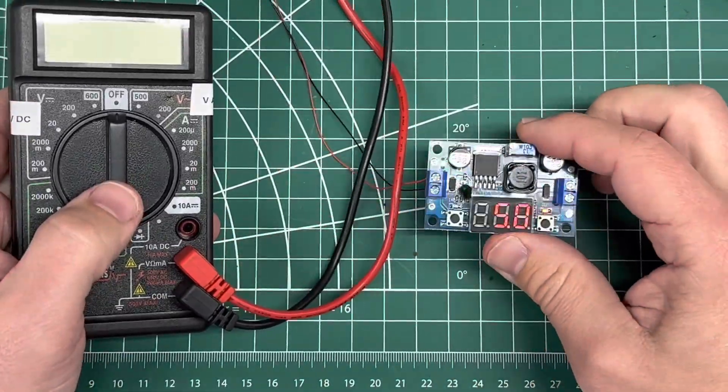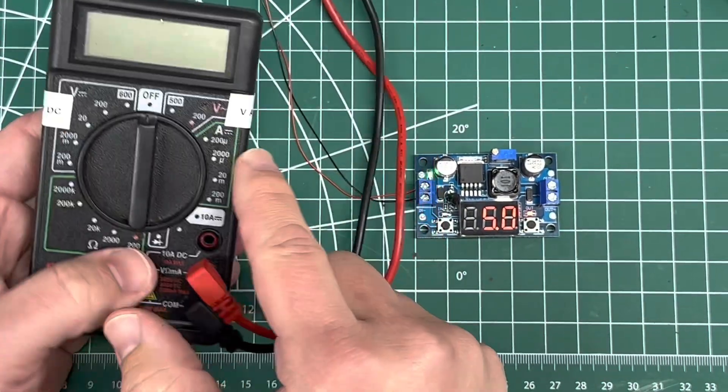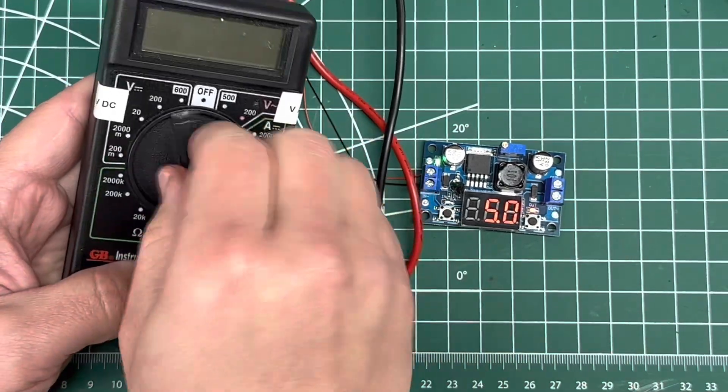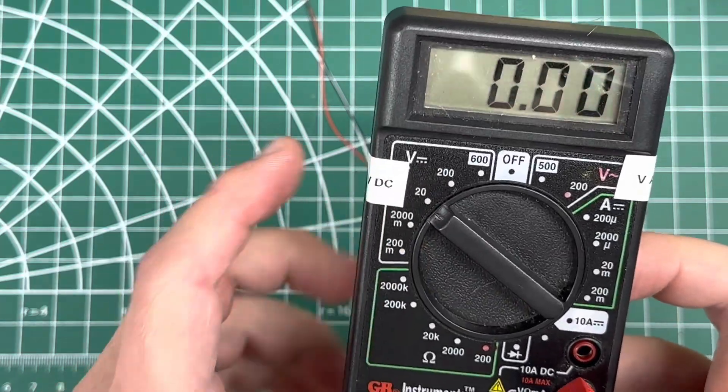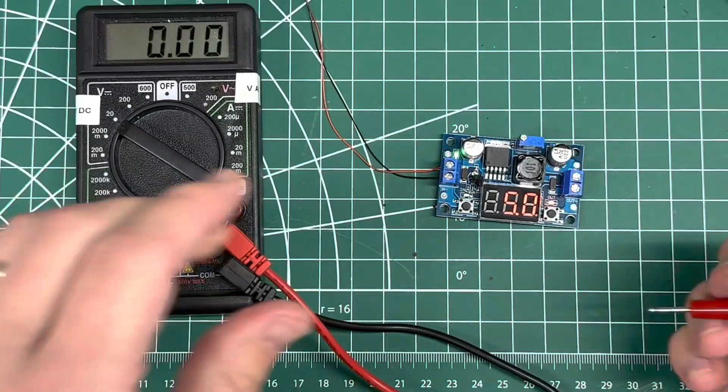If you're interested in checking this board or something else, I've got mine labeled DC and AC because these symbols weren't intuitive to me. V with a tilde is AC, V with a line and dotted line is DC. So direct current, alternating current, and we're on direct current because that's how we're feeding this thing.